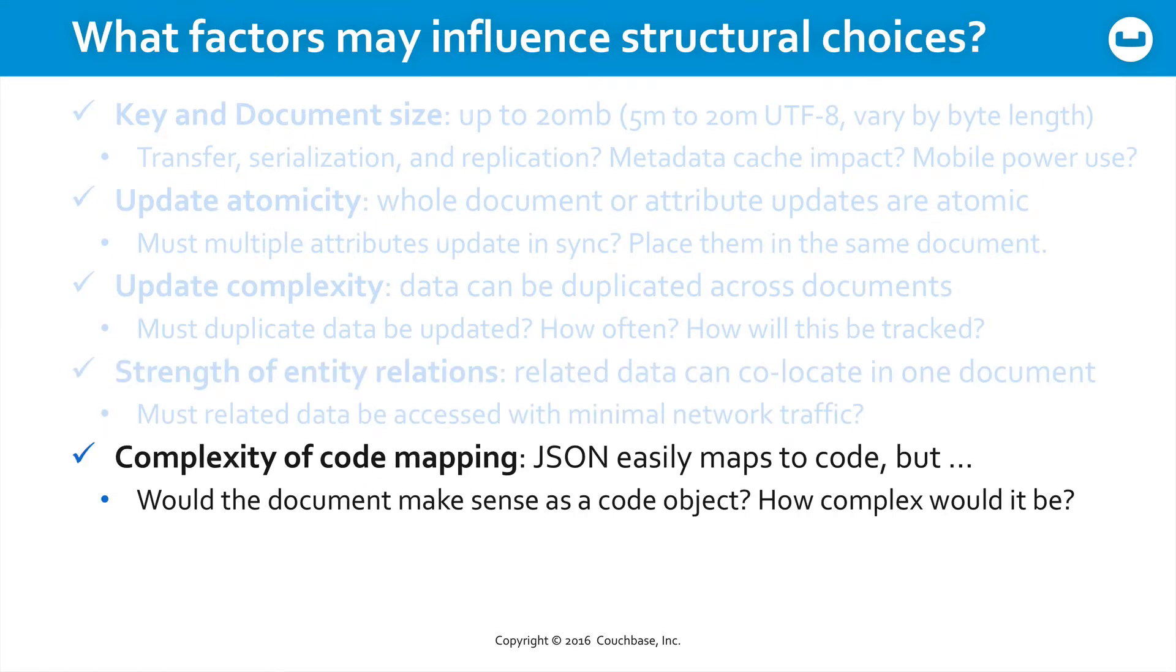Last, what about the complexity of code mapping? JSON does easily map to code, but would a particular document make sense as a code object? How complex would that object need to be? Are you working with a pre-existing code base, or do you have the opportunity to design your object model and your data model in sync with one another?